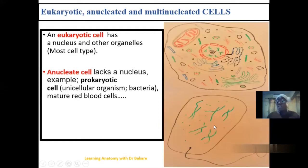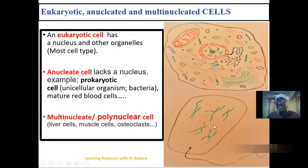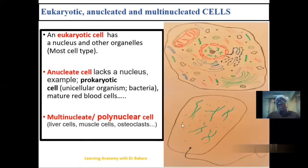We also have multi-nucleated cells, which means they have more than one nucleus — two or more nuclei. Examples are the liver cells, muscle cells, and osteoclasts, and they are also referred to as polynuclear cells.